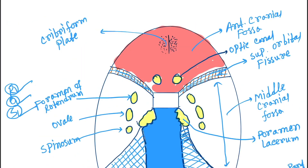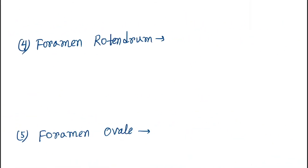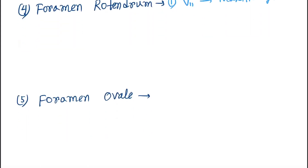Now, foramen rotundum. Here you can see the foramen rotundum in the base of the skull. The structure passing through foramen rotundum is the second branch of the trigeminal nerve, that is the maxillary branch.